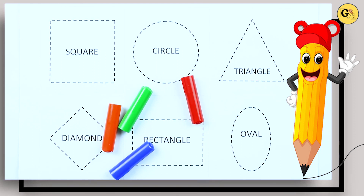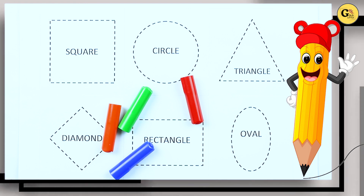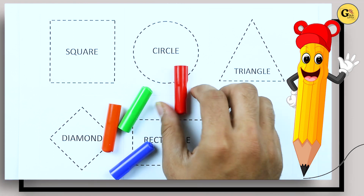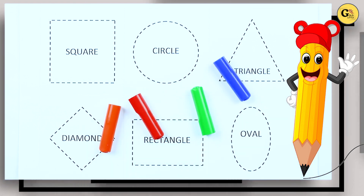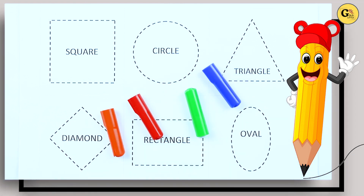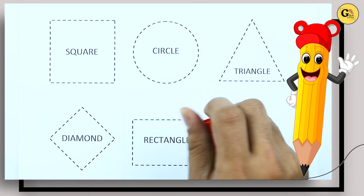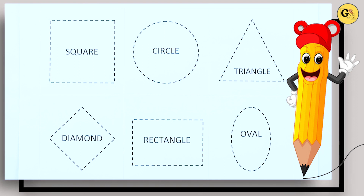Hello friends, today we learn shapes: square, circle, triangle, diamond, rectangle, oval with colors — red color, blue color, orange color, green color. Let's start.